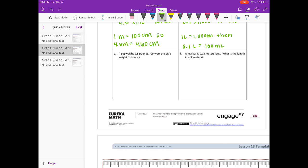E. A pig weighs 9 and 8 tenths pounds. Convert the pig's weight to ounces. We know that 1 pound is equal to 16 ounces. So we would need to do 9 and 8 tenths times 16. I'm going to multiply 9 and 8 tenths times 10 to make it 98 times 16. And then we can divide later. So 6 times 8 is 48. Carry the 4. 6 times 9 is 54 plus 4 is 58.